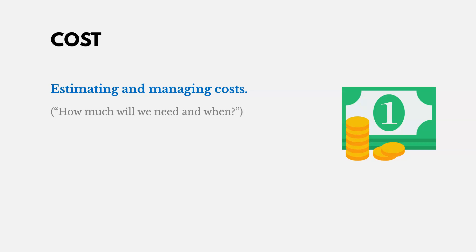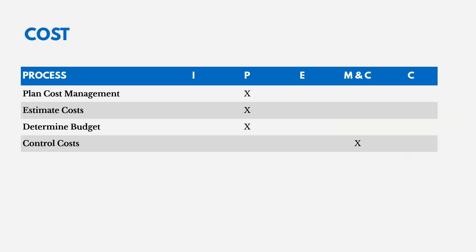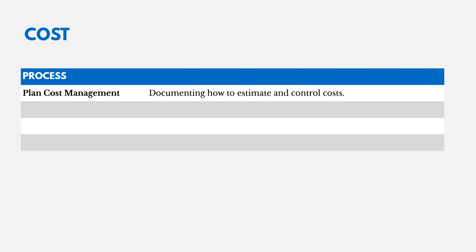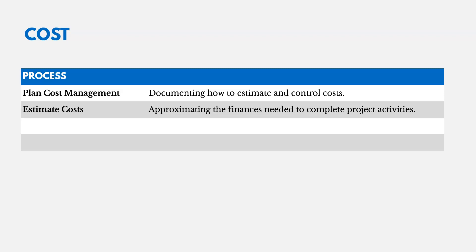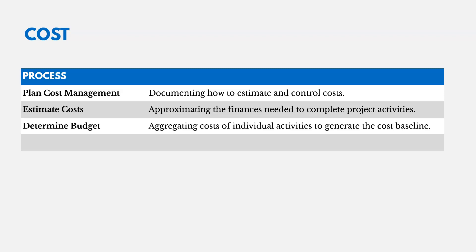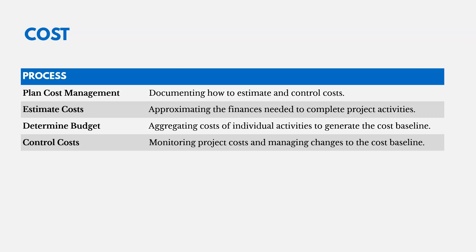Cost management involves estimating how much we'll need and when. There are four processes — three in planning and one in monitoring and controlling. We plan cost management, documenting how to estimate and control costs. We estimate costs by approximating the finances needed, going by activity costs. We determine the budget by aggregating those activity costs to generate the cost baseline. Then we control costs over time by monitoring project costs and managing changes to the cost baseline.